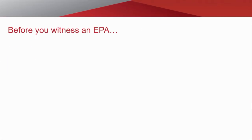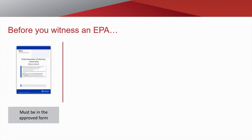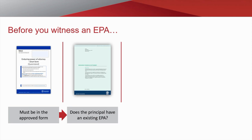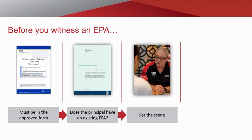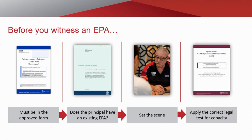It must be clear that the adult is not being pressured into making the enduring document. Sometimes a family member, friend or carer may behave in a manner that is domineering or overbearing, seeking to pressure the principal into making a decision a certain way. You can satisfy yourself that the principal understands the nature and effect of the enduring document and that they are making it freely and voluntarily by setting the scene before conducting the correct legal test of capacity. Before you witness an EPA, first check that it is in the approved form — currently Form 2 version 4 for the short form or Form 3 version 4 long form. Ask the principal if they have an existing EPA in Queensland or in another state or territory; if they do, explain that making a new EPA could affect the validity of the existing one, and recommend they seek independent legal advice.